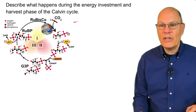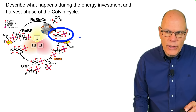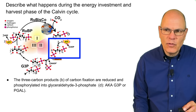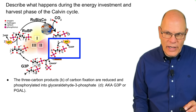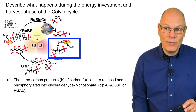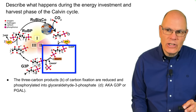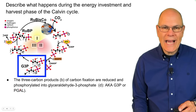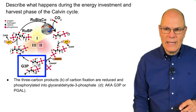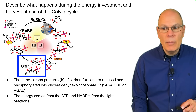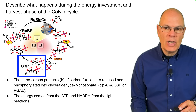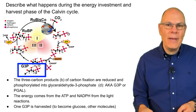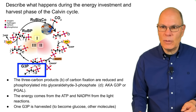Describe the energy investment and harvest phase of the Calvin cycle. The three-carbon product from carbon fixation is reduced and phosphorylated: ATP contributes a phosphate group, and NADPH donates an electron. The result is G3P — glyceraldehyde-3-phosphate, also called PGAL — which has much more energy than the starting molecule because it was given that energy from ATP and NADPH. This molecule can be harvested from the Calvin cycle and used to build plant matter — the origin of biomass in almost any ecosystem.